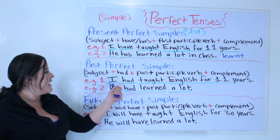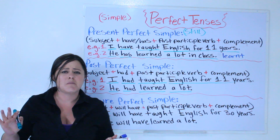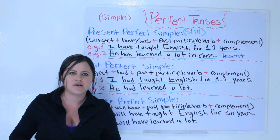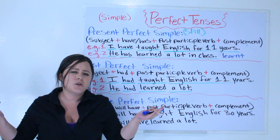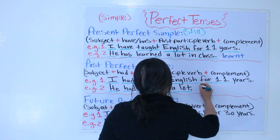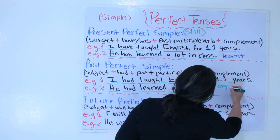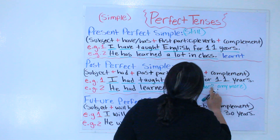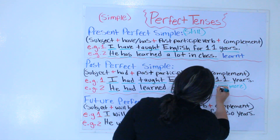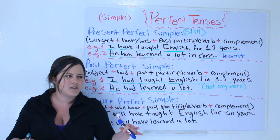But if I say 'I had taught English for 11 years,' that means I don't do it anymore. I did it in the past, I don't do it anymore. So the past perfect simple means 'not anymore' — something you did in the past but no longer do.